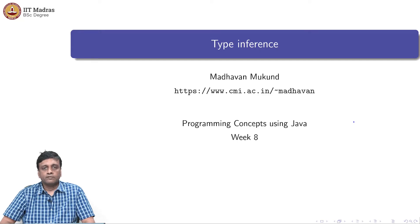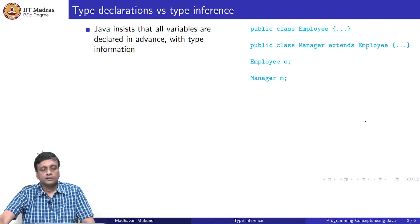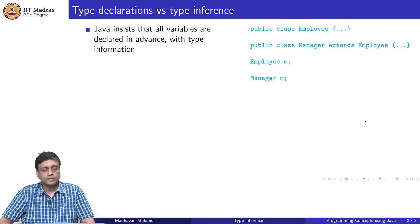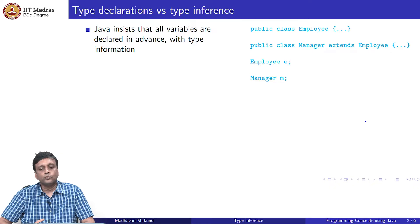Right from the beginning we have been talking about Java as a strongly typed language and we have been spending a lot of time about declaring types and using them consistently. Let us look at a topic called type inference, which is quite popular in programming languages. We have type declarations and we want to contrast type inference. What Java tells us to do is to declare all variables in advance with their type and this type information is then used later on.